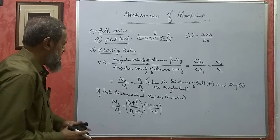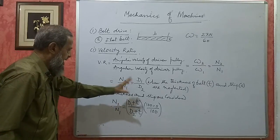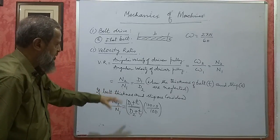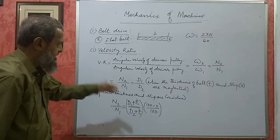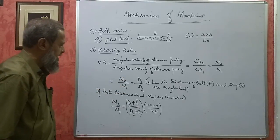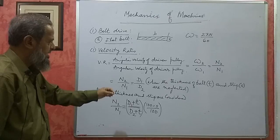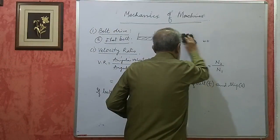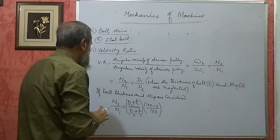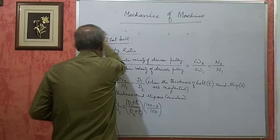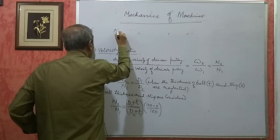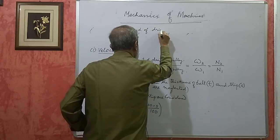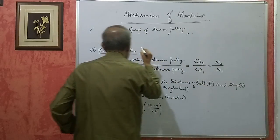So three equations arise: one neglecting both thickness and slip, one considering only thickness, and one considering both slip and thickness. They can give a problem where one diameter must be calculated three times — you get very close but not identical answers in all three cases. N1 is speed of driver pulley in RPM, N2 is speed of driven pulley in RPM, D1 is diameter of driver pulley, D2 is diameter of driven pulley — all in the same unit. T is thickness of belt in the same unit, and S is percentage slip.